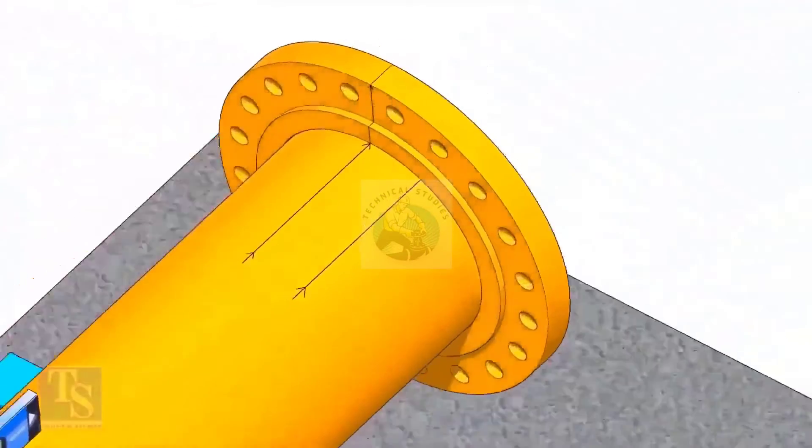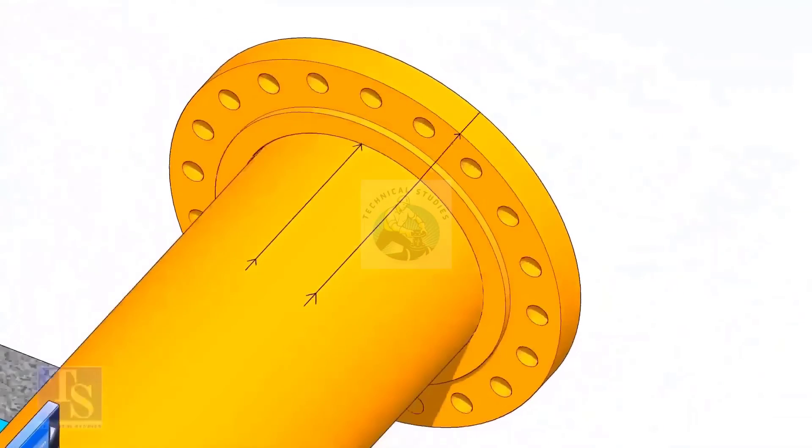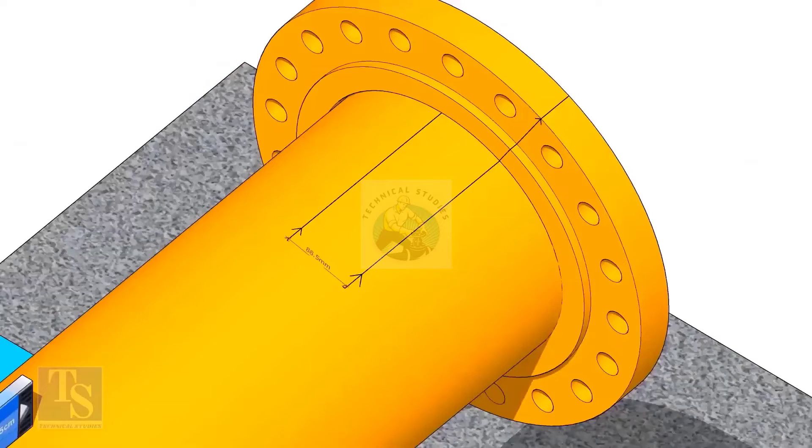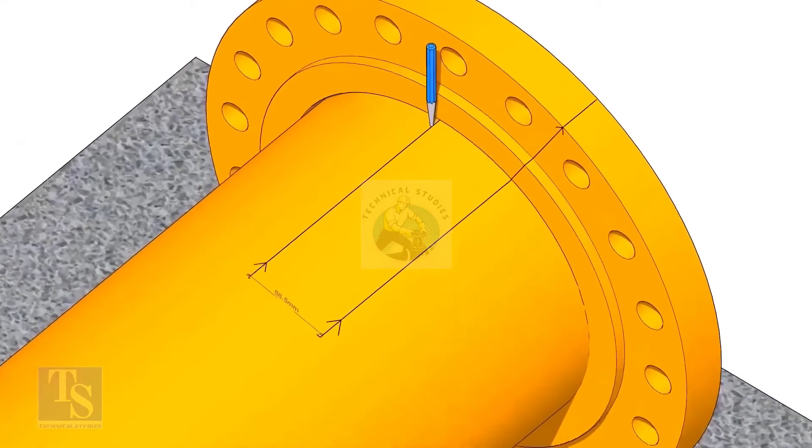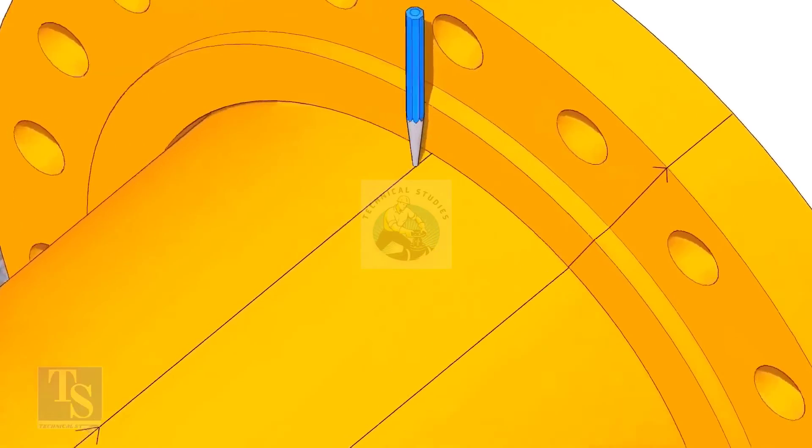Put the flange on the pipe. Rotate the flange until the center line on the flange and the 25 degree line on the pipe comes in a line. Don't forget to punch mark the center lines.